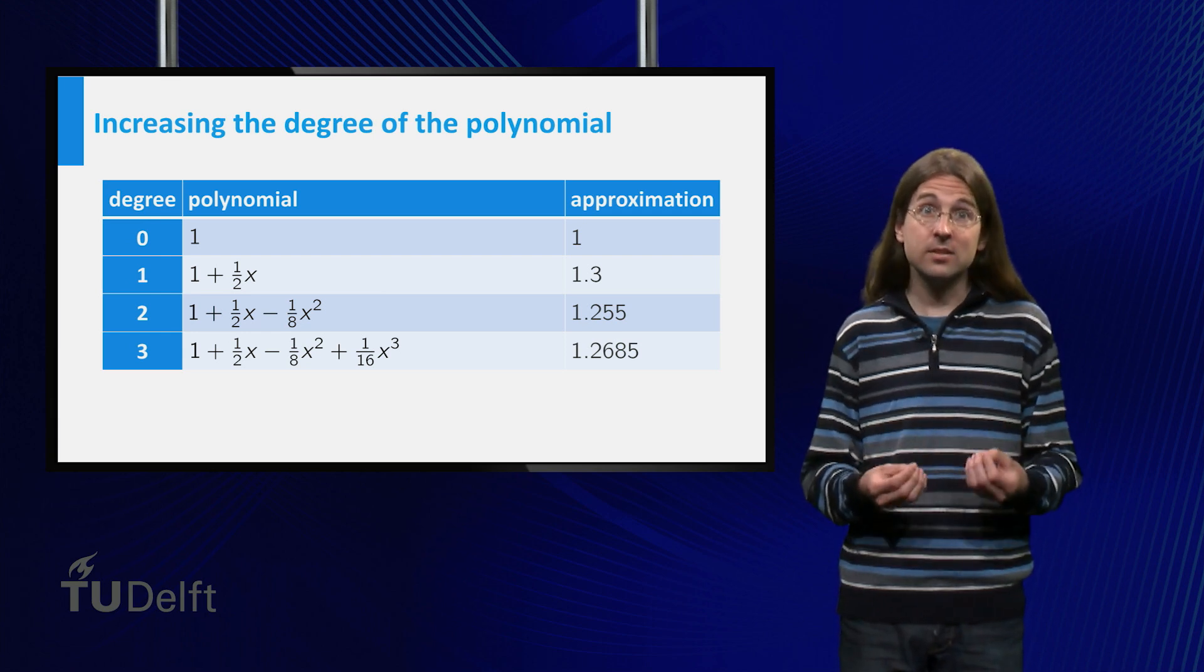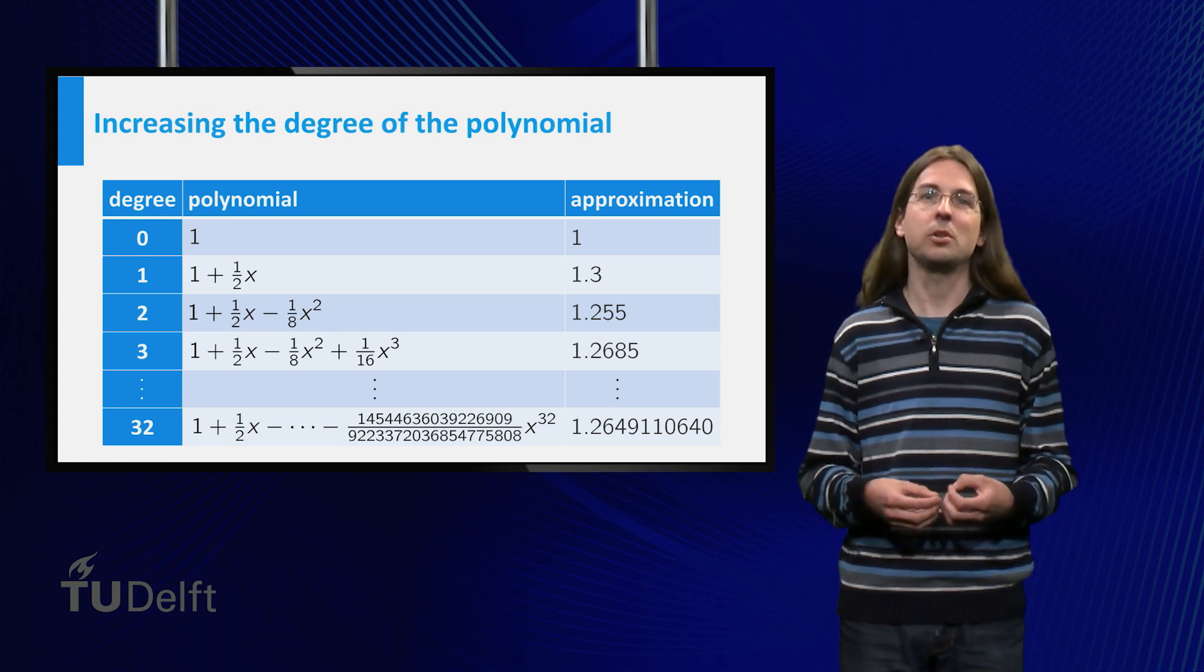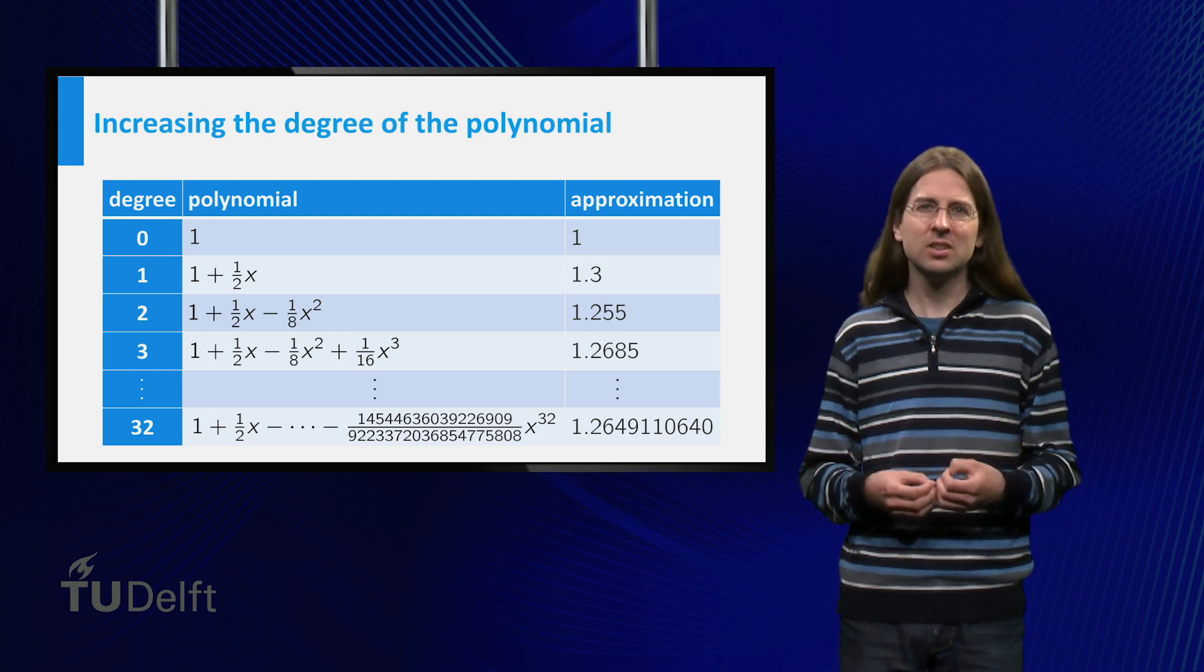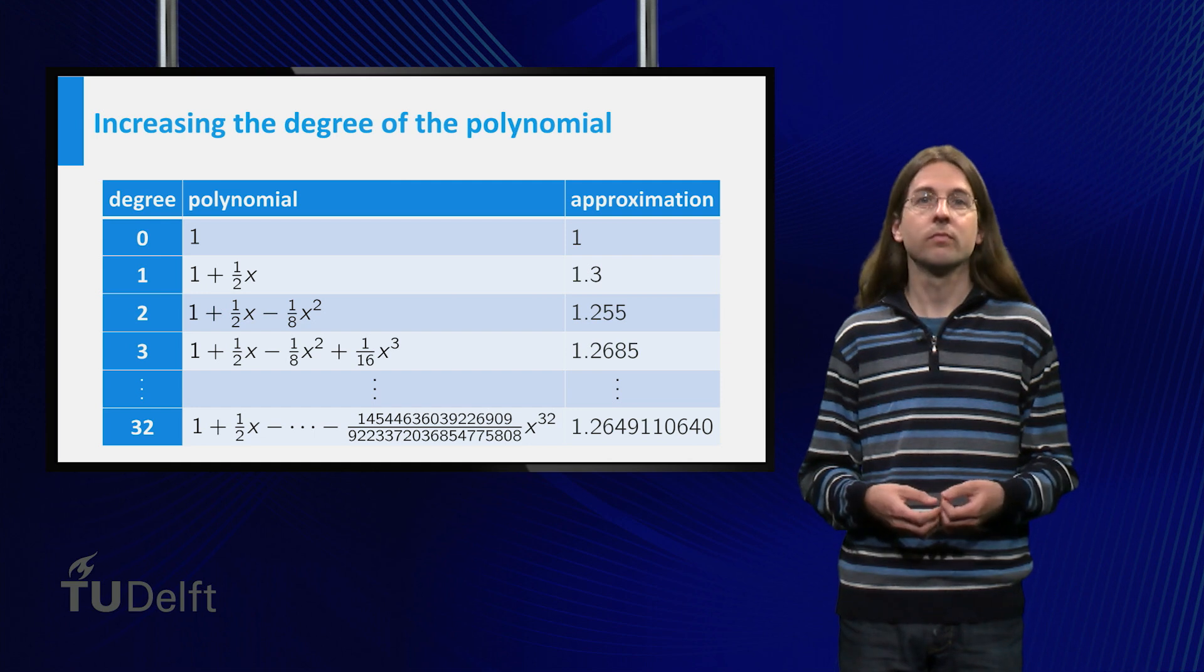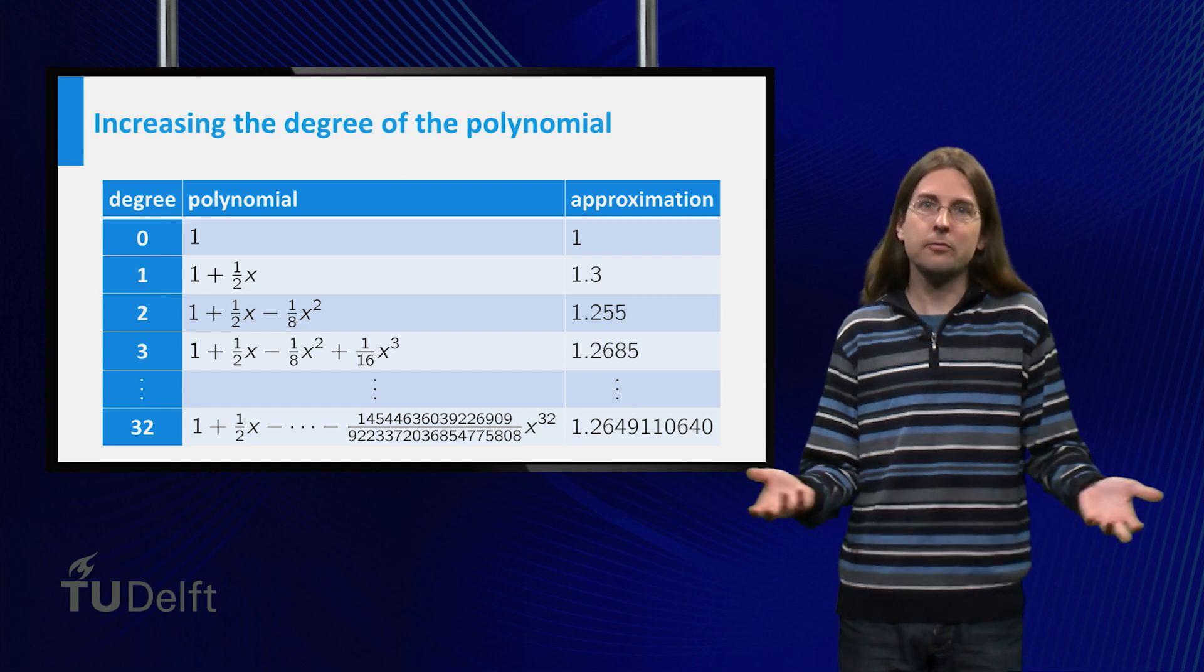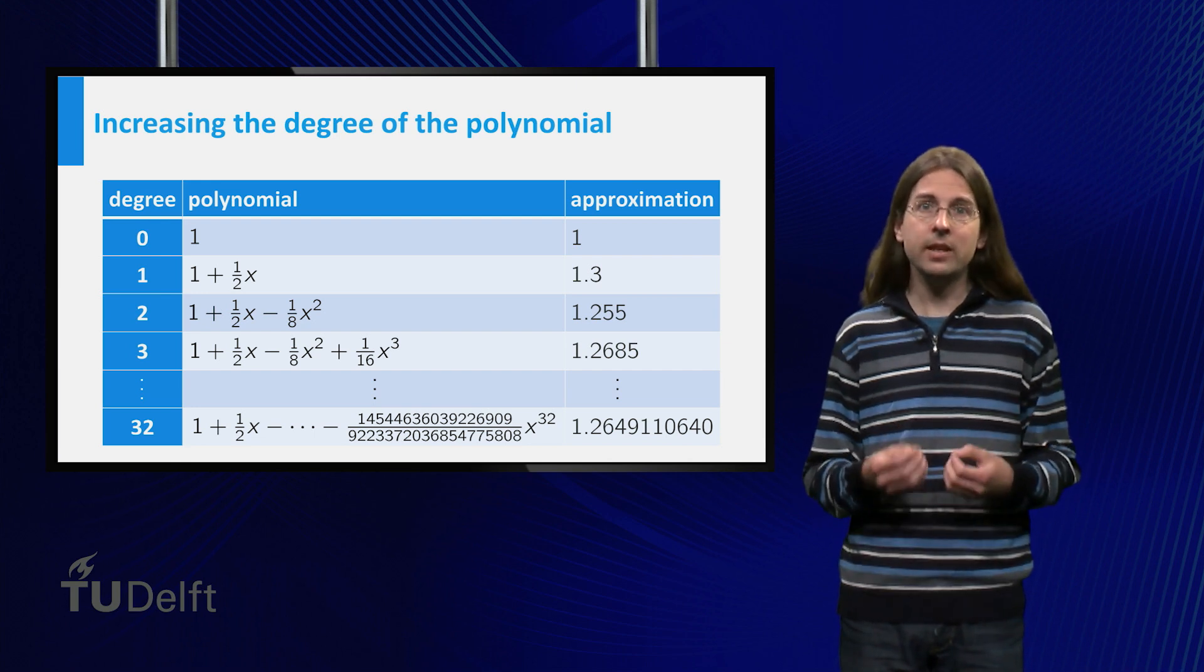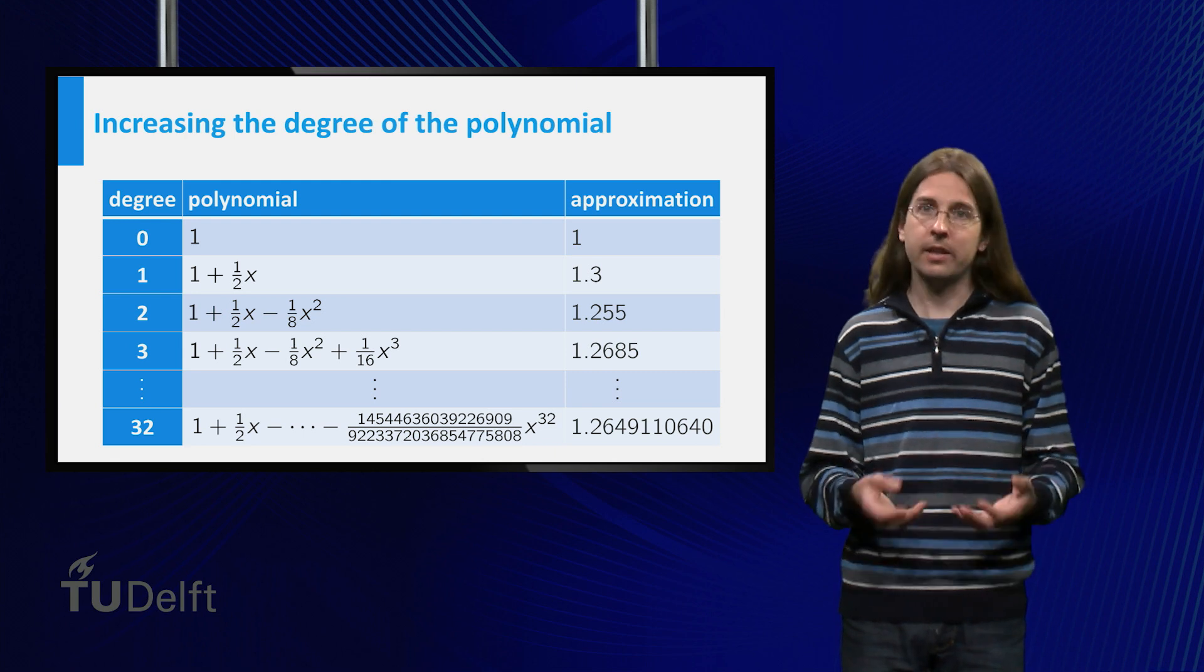To get to 10 digits, it turns out we need to calculate the degree 32 Taylor polynomial. This polynomial contains 33 terms, and it might still sound a lot of work to add up 33 numbers. But for a calculator this is of course no work at all. In particular, we have reduced calculating a square root to simpler operations as multiplication and addition.